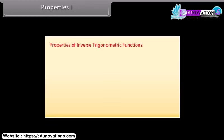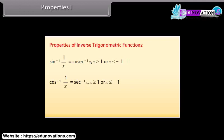Let's learn about properties of inverse trigonometric functions. sin⁻¹(1/x) = cosec⁻¹ x for |x| ≥ 1. cos⁻¹(1/x) = sec⁻¹ x for |x| ≥ 1. tan⁻¹(1/x) = cot⁻¹ x for x > 0.